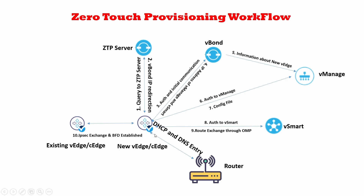Once a new vEdge is bought from Cisco, Cisco maintains a database of all vEdges sold to each organization. When the device is shipped to the customer's environment, its serial number is registered along with the vBond IP in the ZTP server's database. Once the vEdge is powered on, it sends a DHCP request to the local router, receives a DHCP and DNS entry, and obtains its own public IP to reach the internet.